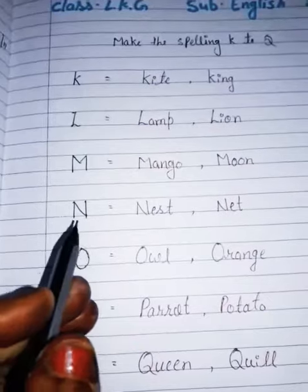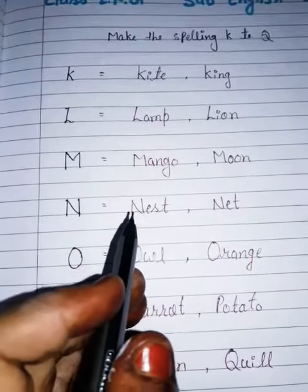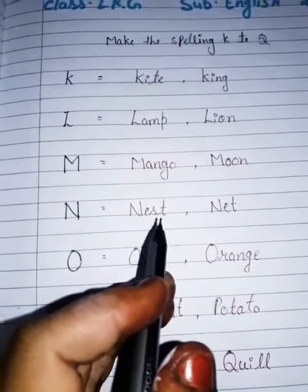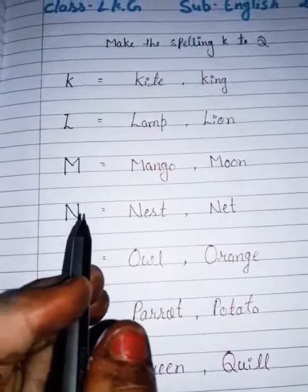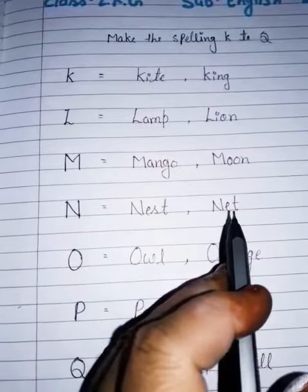N. N for nest, N-E-S-T, nest. N. N for net, N-E-T, net.